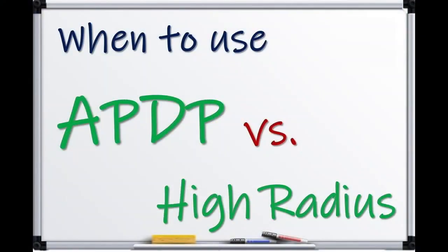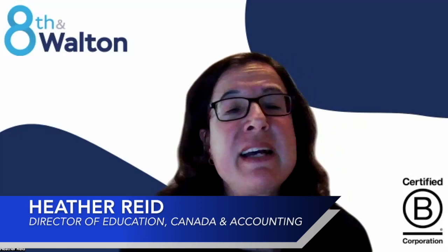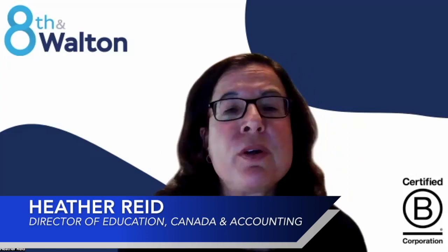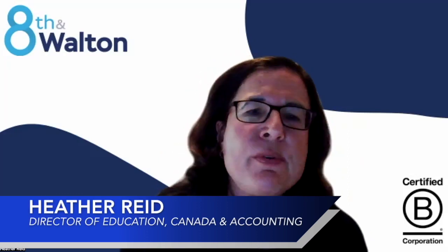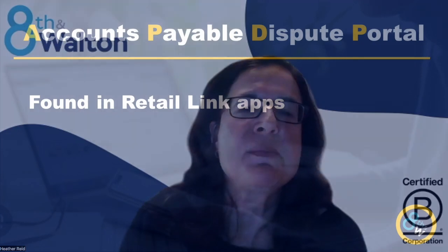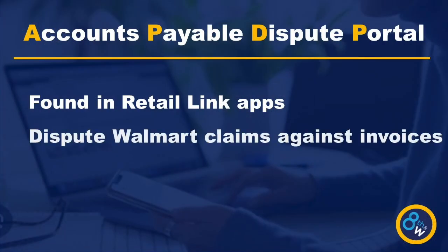Let's tackle a top accounting question: APDP versus High Radius. APDP, or Accounts Payable Dispute Portal, is your first step — access it through Apps and Retail Link. Here, suppliers dispute Walmart's claims against their invoices.